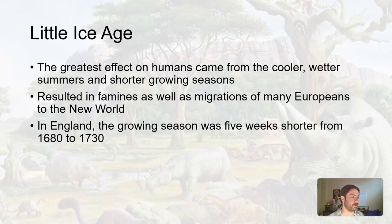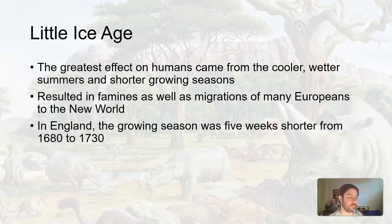For example, in England the growing season was five weeks shorter from 1680 to 1730 — right in the middle of this Little Ice Age. Five weeks is a lot. If you've ever tried to grow anything, five weeks makes a heck of a difference.